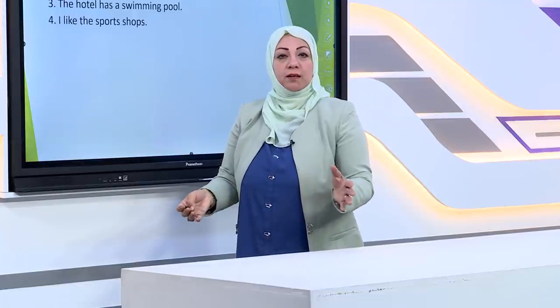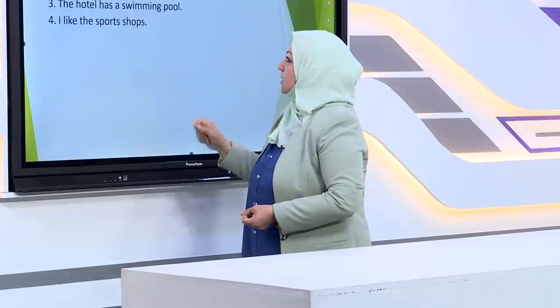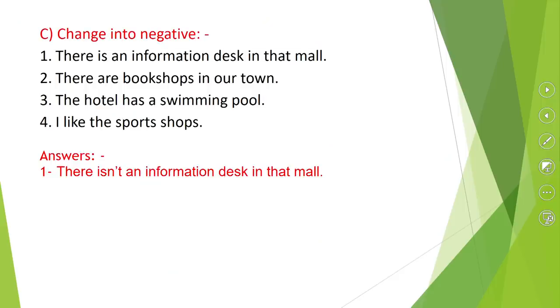If you want to change into negative and you have 'is,' 'am,' or 'are,' you have to add 'not' to the verb to be. Because we have 'is,' it will be 'is not' or 'isn't.' So: there isn't an information desk in that mall.